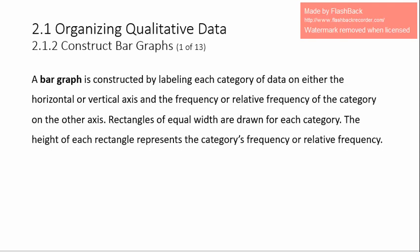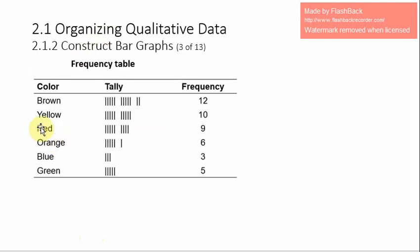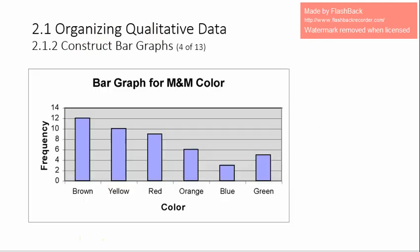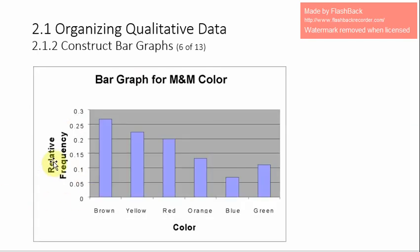The height of each rectangle represents the category's frequency or relative frequency. We will learn how to construct frequency bar graphs and relative frequency bar graphs. Using the M&M data, here is the frequency bar graph and the relative frequency bar graph. I will show you how to create these in Excel in a separate video.